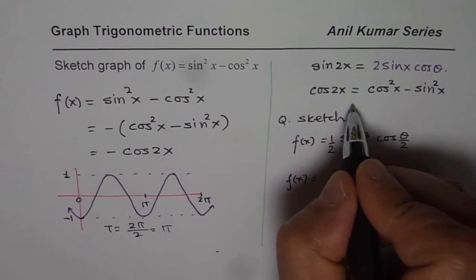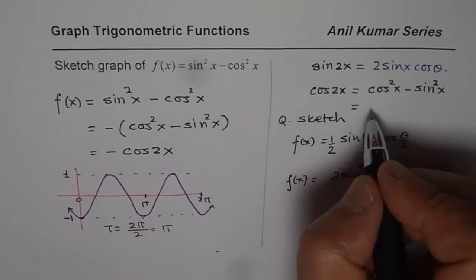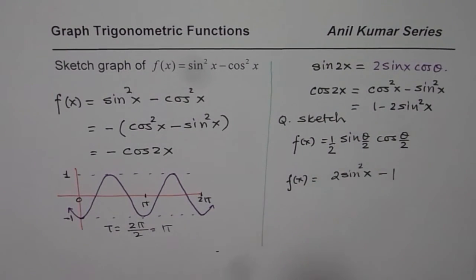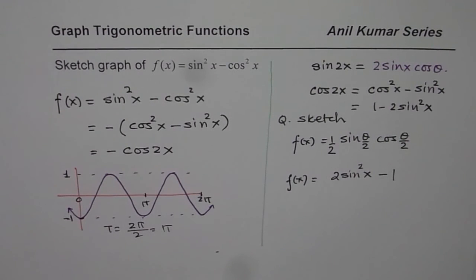Be careful, right? Because cos(2x), you know, could be written as 1 - 2sin²x. So at times you can use the knowledge which you have learned about compound angles and similar things. Simplify these expressions and then sketch your graph. It will be good practice for you.